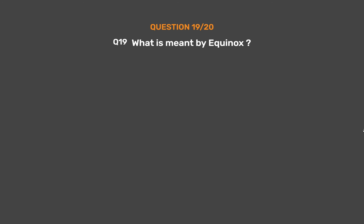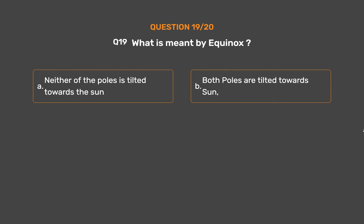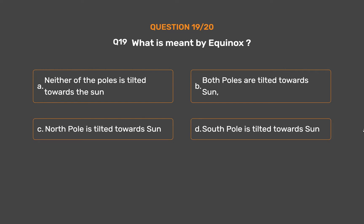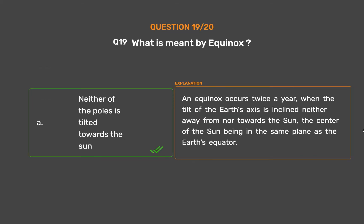Question number 19. What is meant by equinox? Option A: Neither of the poles is tilted towards the Sun. Option B: Both poles are tilted towards the Sun. Option C: North pole is tilted towards the Sun. Option D: South pole is tilted towards the Sun. The correct answer is Option A: Neither of the poles is tilted towards the Sun. An equinox occurs twice a year, when the tilt of the Earth's axis is inclined neither away from nor towards the Sun, with the center of the Sun in the same plane as the Earth's equator.